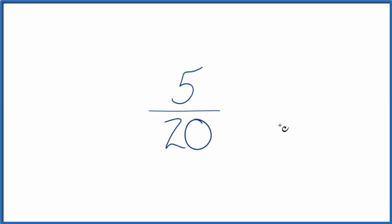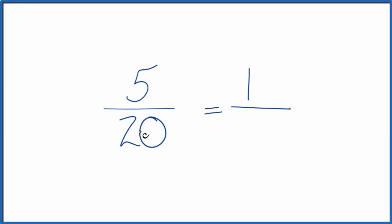For 5/20, we can simplify this because 5 goes into 20 four times. It goes into itself one time. So we divide 5 by 5, we get 1. 20 divided by 5, that's 4.